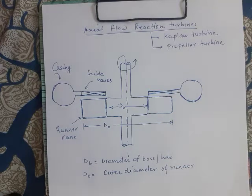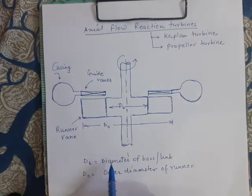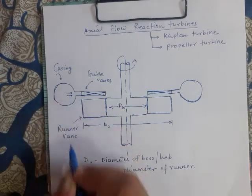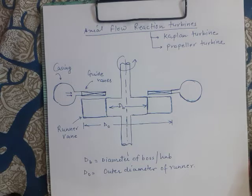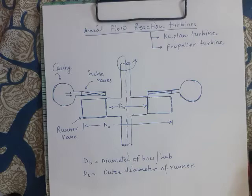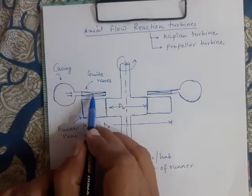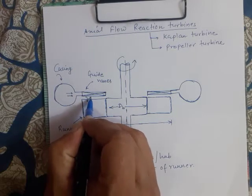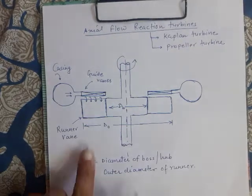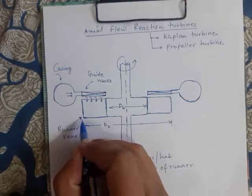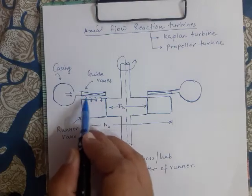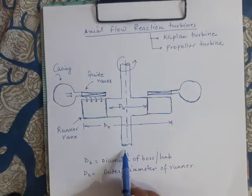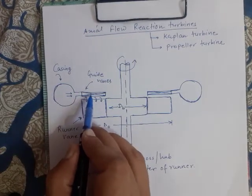Let's study the basic concept of axial flow reaction turbines. This is a basic diagram showing a cut section of an axial flow reaction turbine. Water is supplied to the casing, and in a reaction turbine the casing is completely filled with water. From the casing, water goes to the guide vanes. The guide vanes direct the water to enter the runner vanes in the axial direction — that is, along the axis.